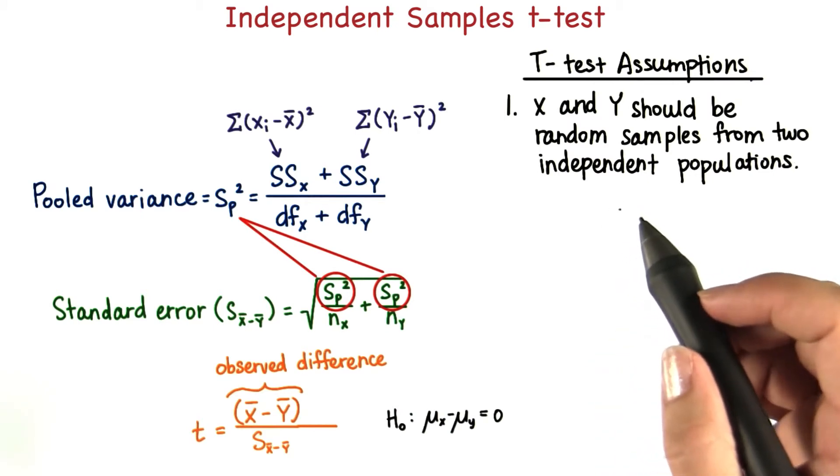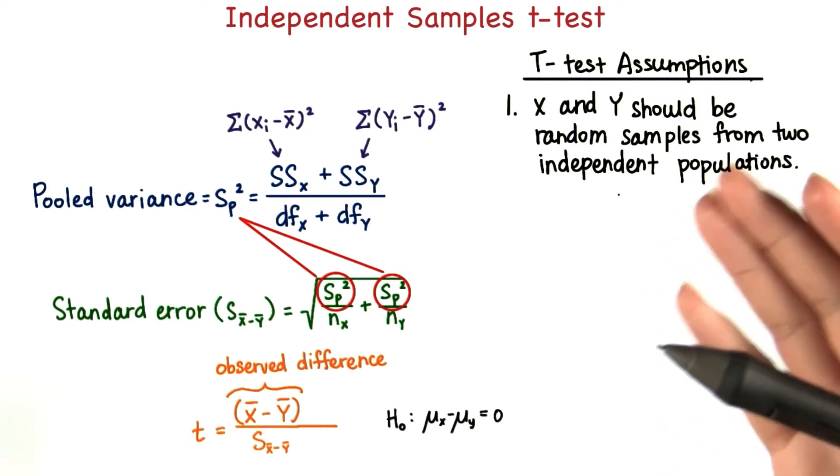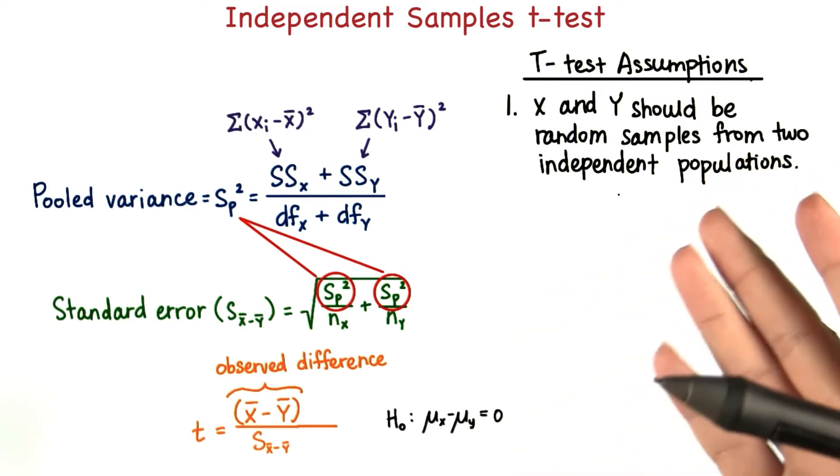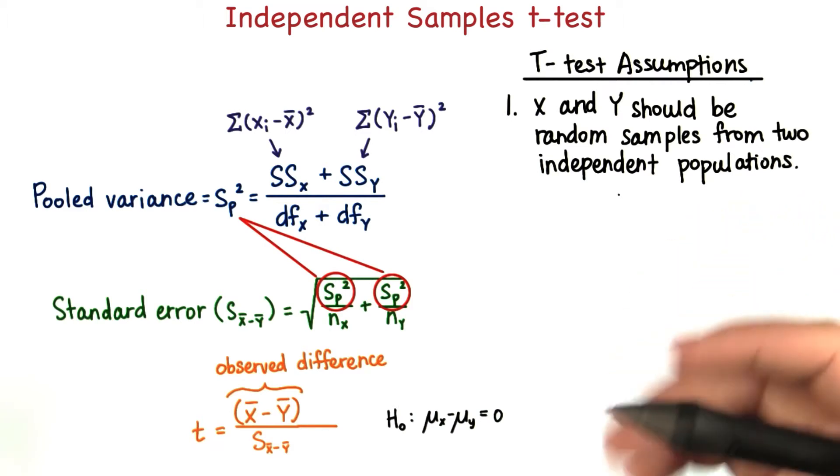Remember when we looked at dependent samples, data coming from the same subject twice? In this case, the populations should be independent.